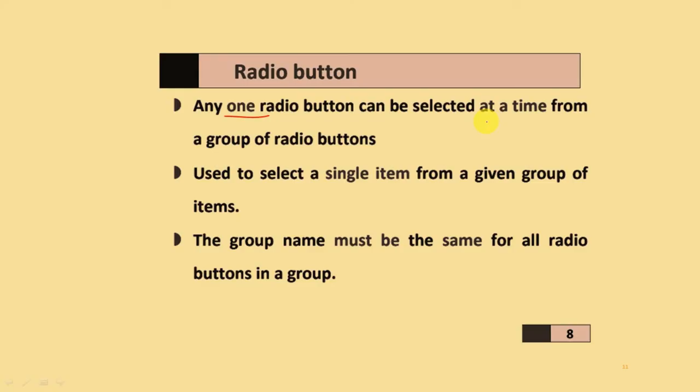A radio button allows only one selection at a time from a group of radio buttons. It is used to select a single item from a given group of items. The group name must be the same for all radio buttons in that group.